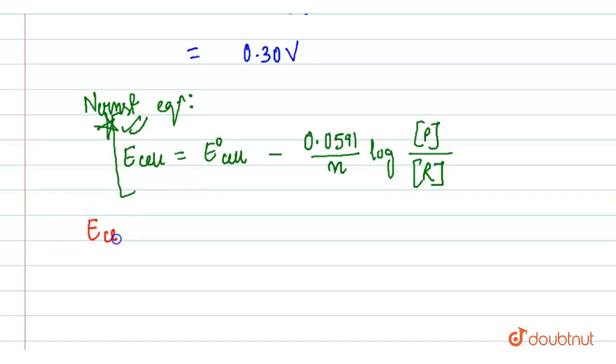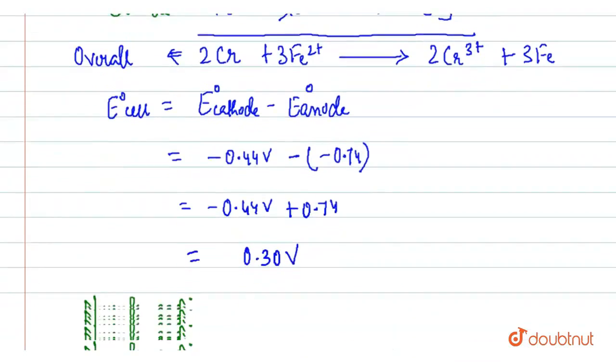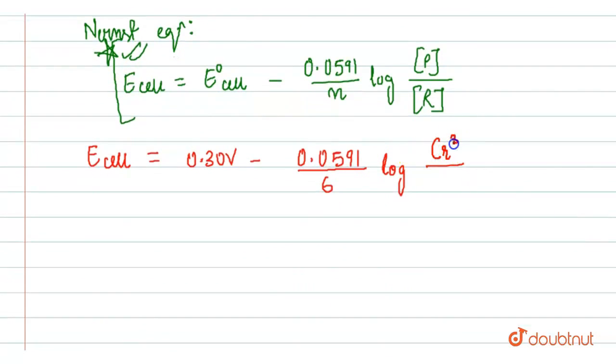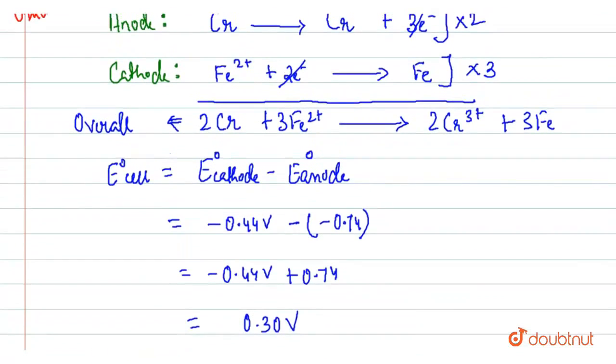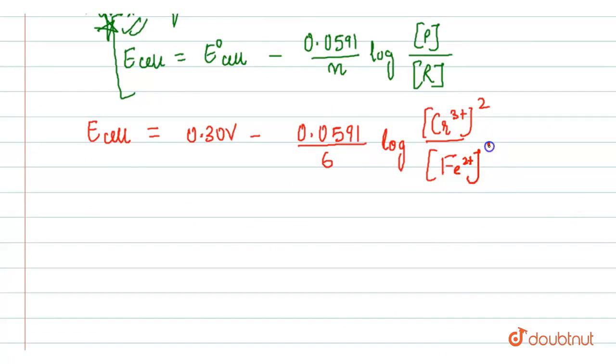We have to calculate E cell of this reaction. E0 cell is 0.30 volt minus 0.0591 divided by N. Number of electrons involved in this reaction is 6. In the product side, Cr3+ and the stoichiometry will go into the power. In the reactant side, there is Fe2+ and the stoichiometry will go into the power.